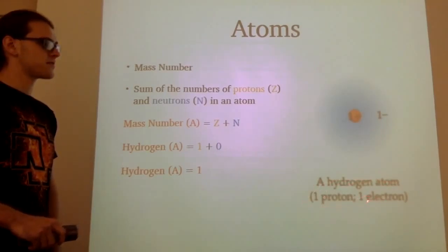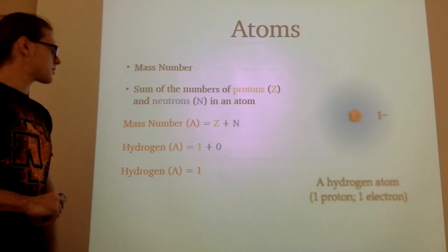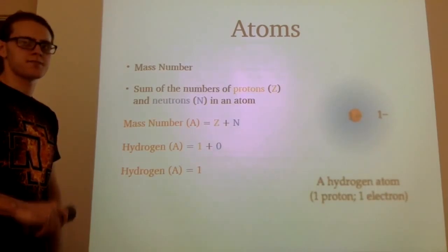Hydrogen has one proton, one electron. So for the mass number of hydrogen, one plus zero. Easy, right?